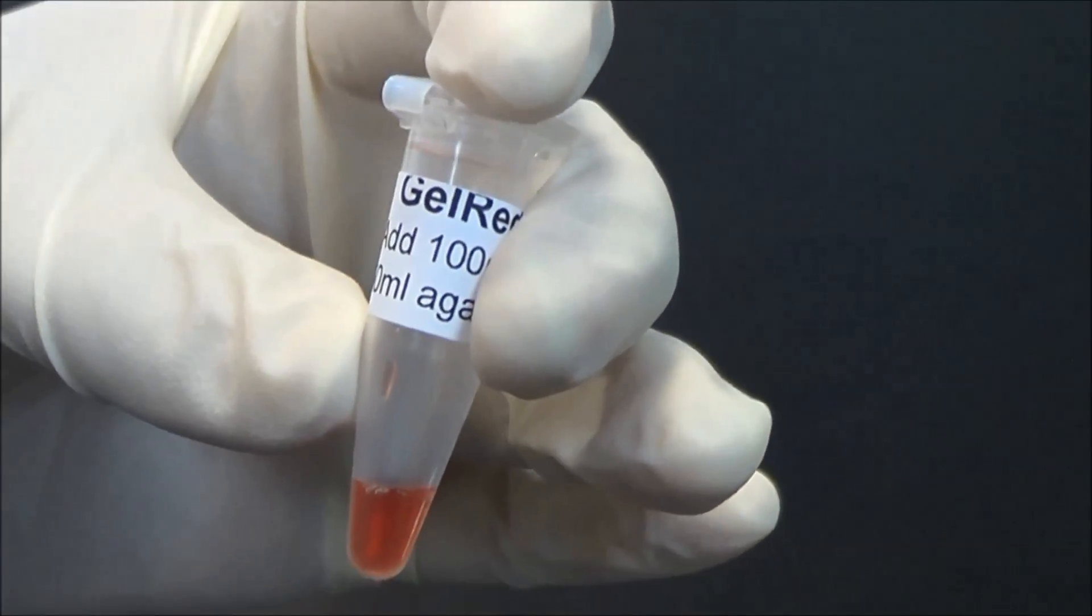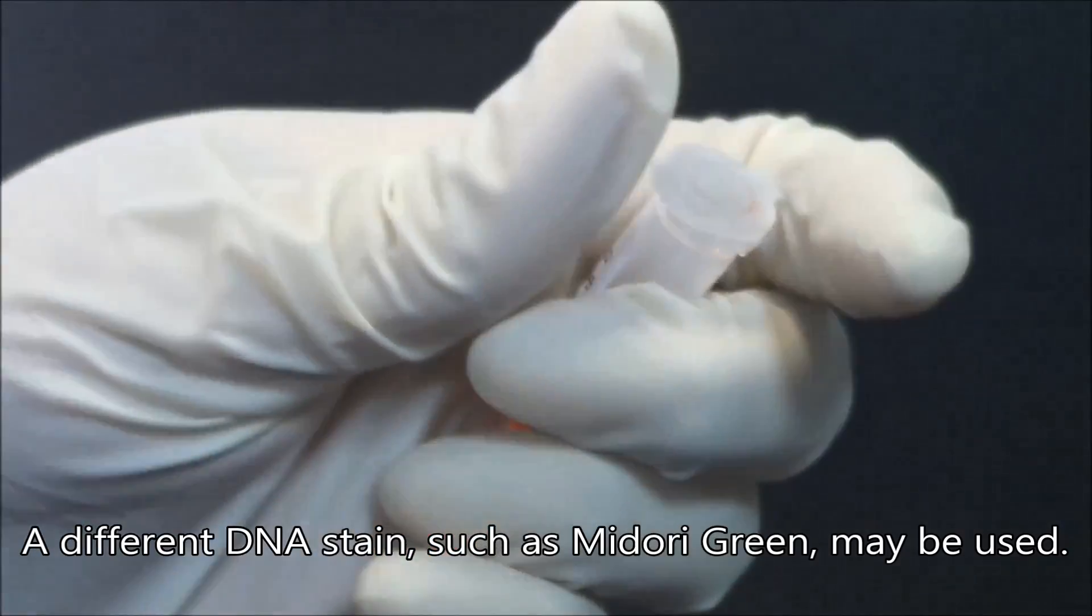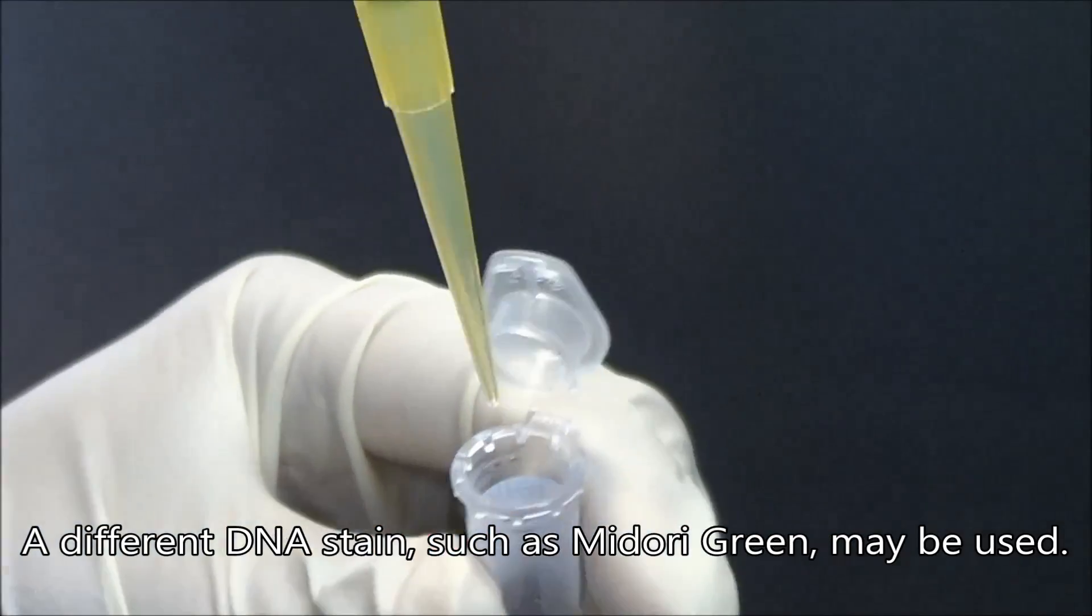To your molten 1% agarose you need to add gel red. This helps visualise your DNA bands under the UV light.